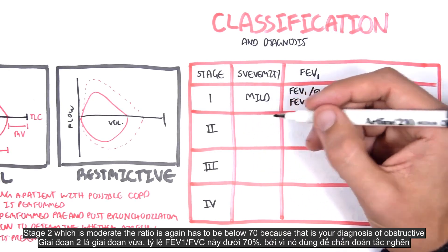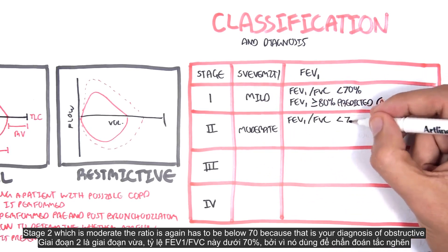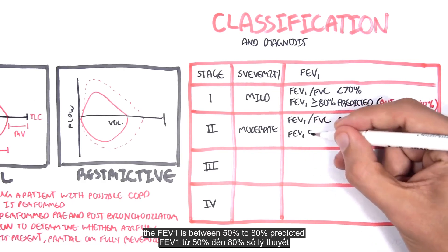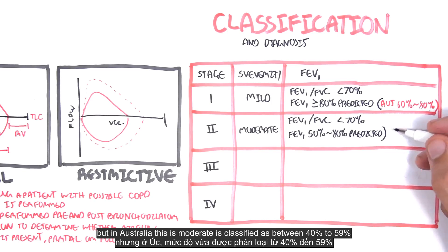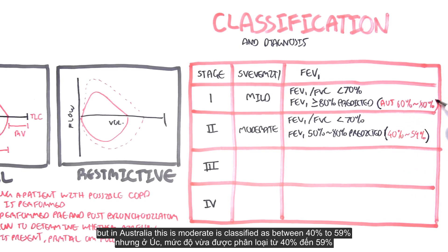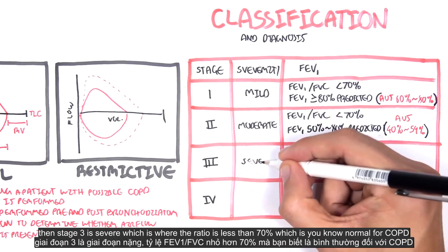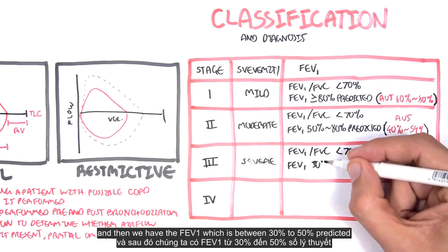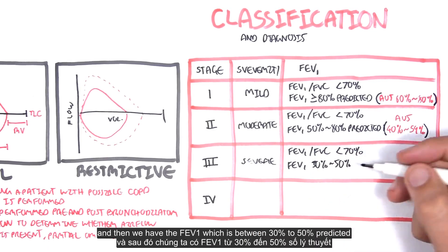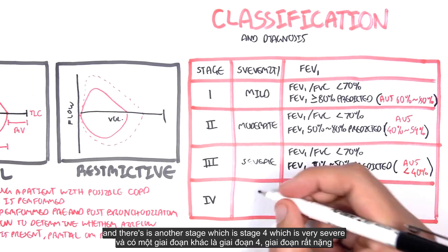Stage two, which is moderate: the ratio again has to be below 70 percent as that is your diagnosis of obstruction. The FEV1 is between 50 to 80 percent predicted, but in Australia moderate is classified as 40 to 59 percent. Stage three is severe, where the FEV1 is between 30 to 50 percent predicted; in Australia severe is classified as below 40 percent.